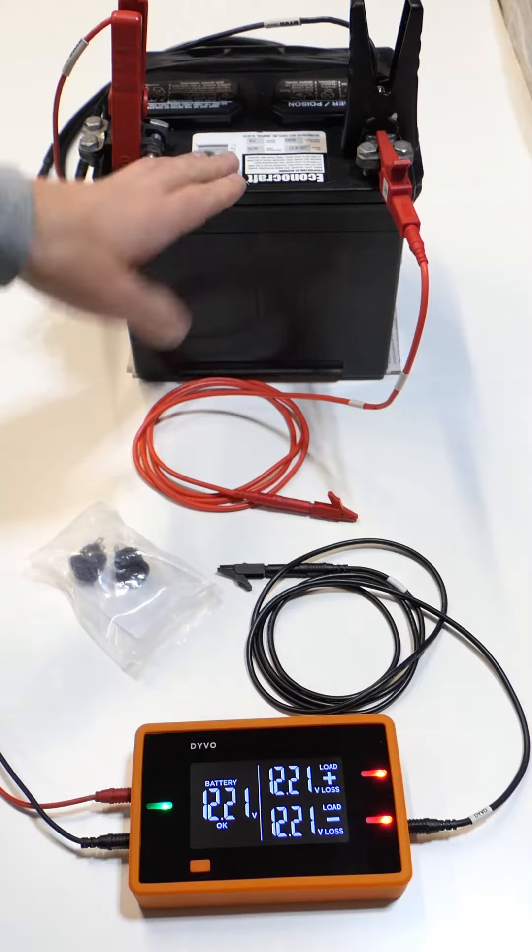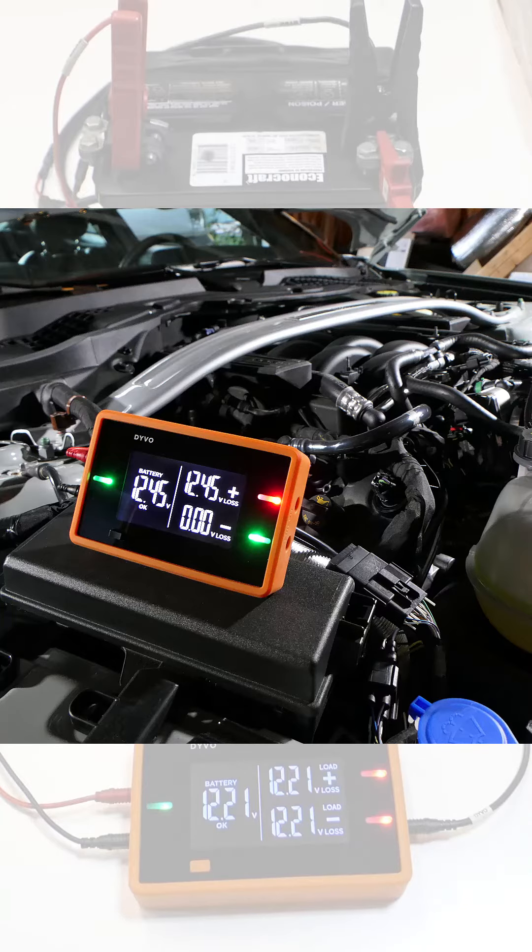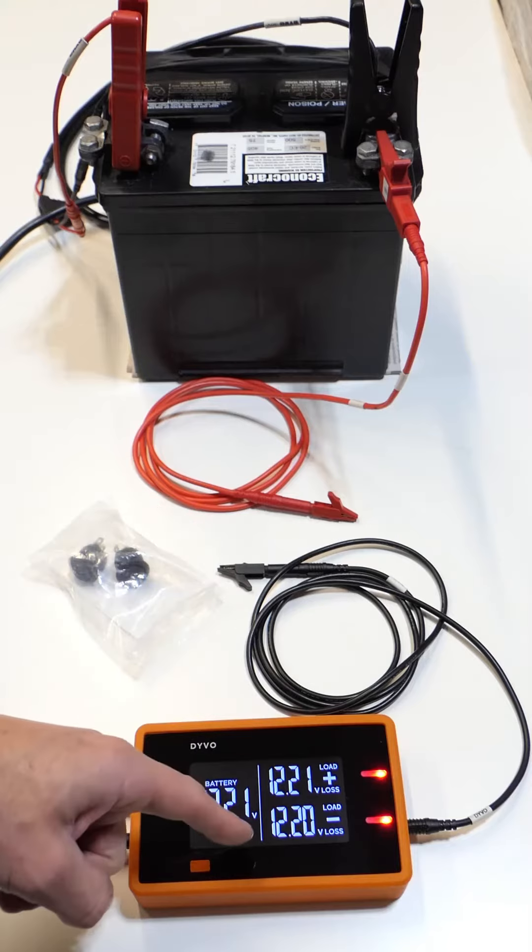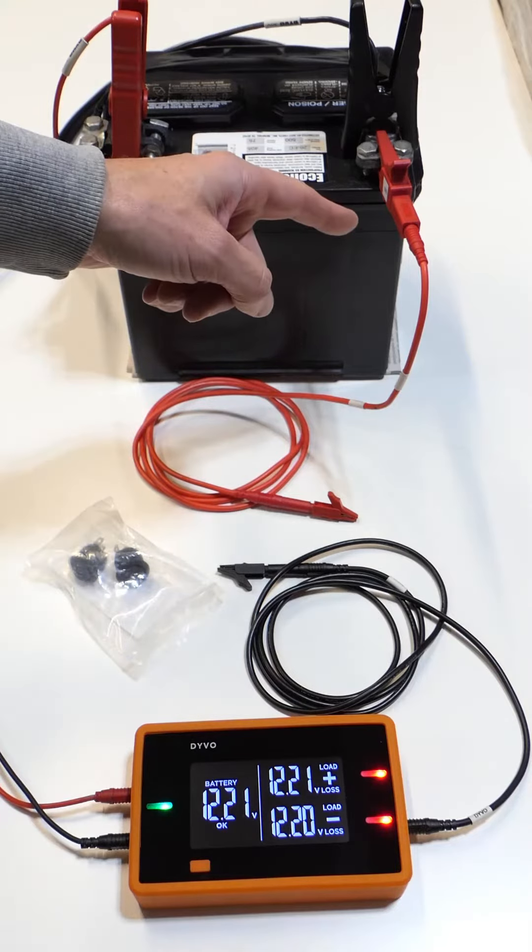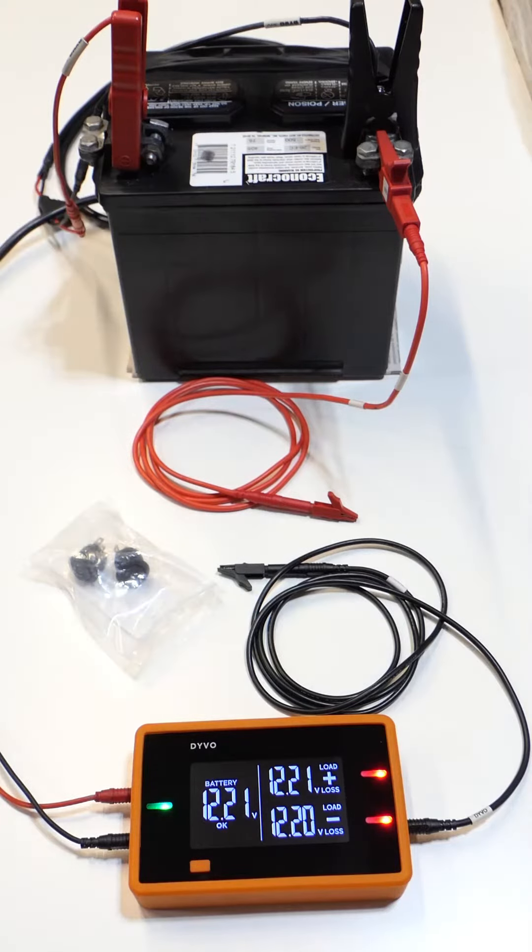I have Devo connected to a 12 volt battery I had on the shelf. I could have used the vehicle's battery instead. The black lead is connected to the negative channel on Devo and my red lead is connected to the negative post on the battery terminal.